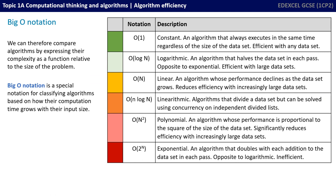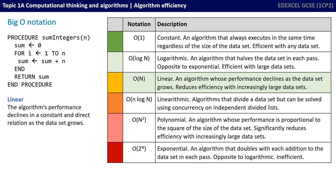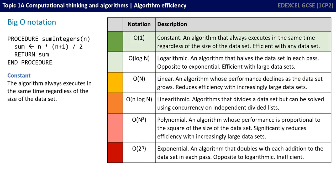These words — constant and linear — are things you'll learn about at A-level. We can now compare algorithms by expressing how complex they are as a function relative to the size of the problem. Big O notation is a special way of classifying algorithms based on how their computational times grow as their input size grows. On screen are a range of big O notations with descriptions. The left-hand version of our original algorithm has linear complexity, whereas the right-hand version has constant complexity — making it a much more efficient algorithm.